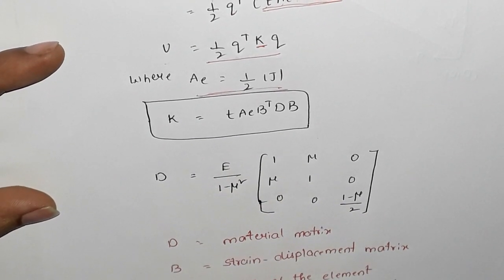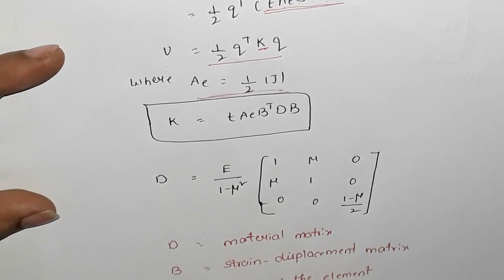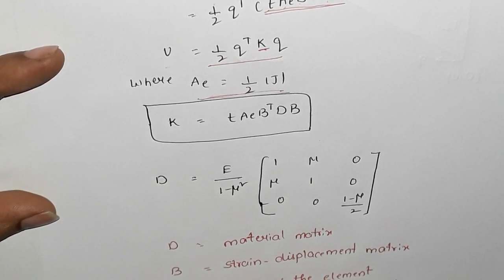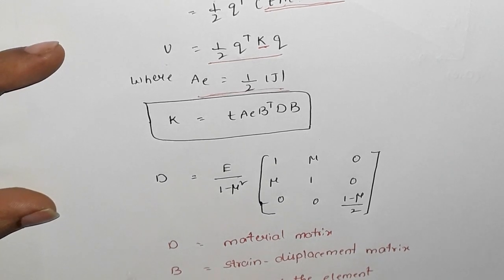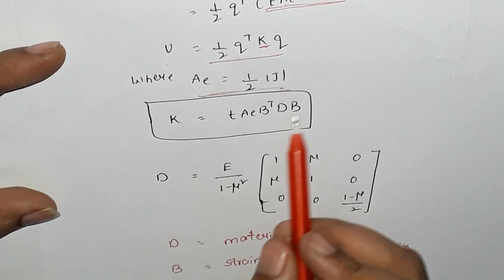Write the stiffness matrix for CST element and explain the terms. So just k is T AE B transpose DB.